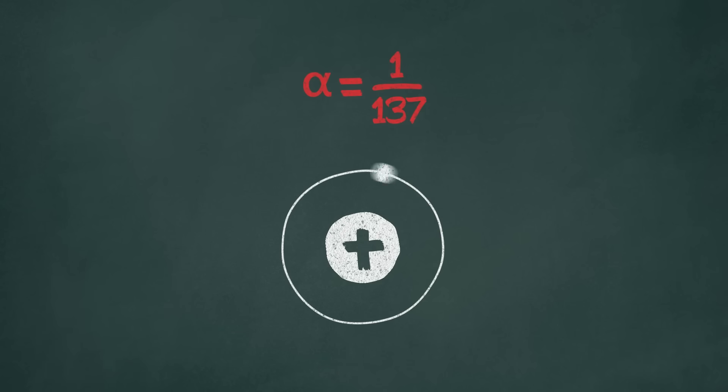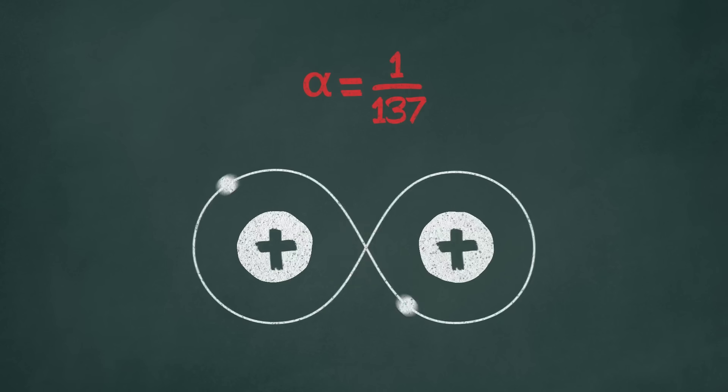Now, what's crazy is that its value lies in a perfect sweet spot. It's strong enough to bind electrons to the atom's nucleus, but loose enough to let them whizz around and interact with other atoms, performing chemical reactions, which are kind of the basis of life.